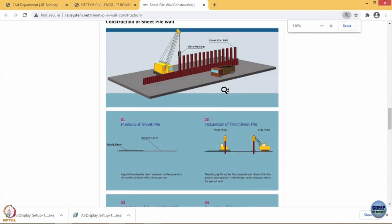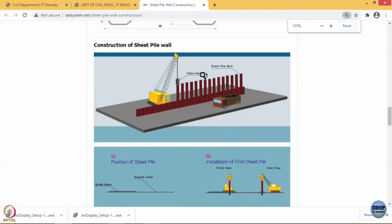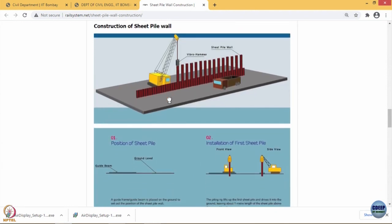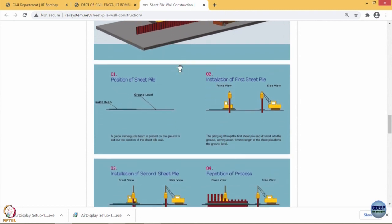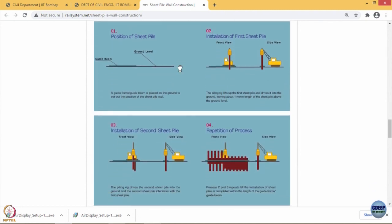This is how the sheet pile wall is being created. This is the first installation followed by the next hammering of the sheet piles and they get embedded into the soil mass.